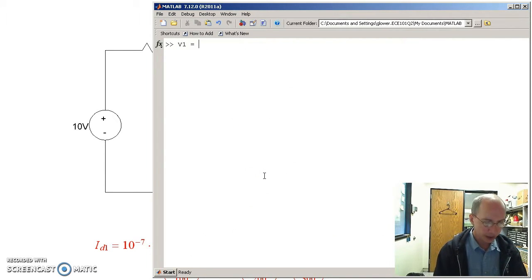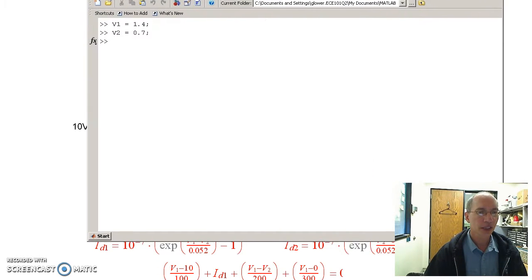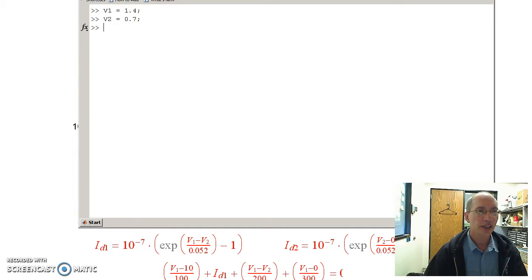So MATLAB could say V1 is 1.4 volts. I guess V2 is 0.7 volts. Once I know V1, V2, I know the current through the diode. V1, V2, 10 to the minus 7 times the exponent of (V1-V2)/0.052 minus 1.